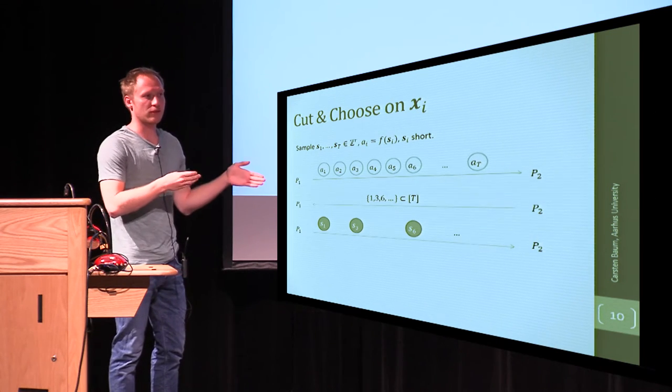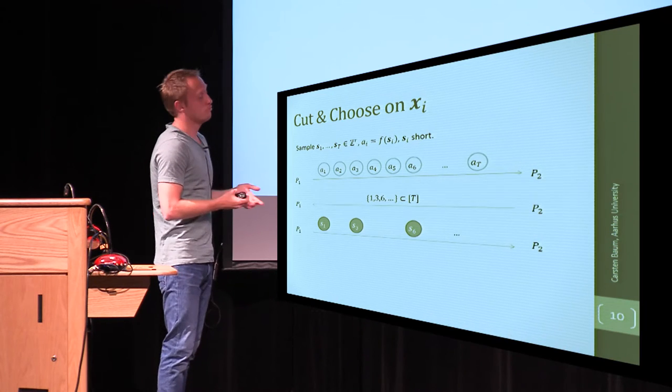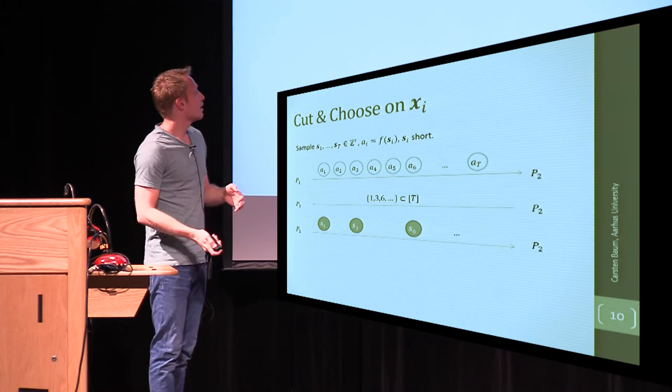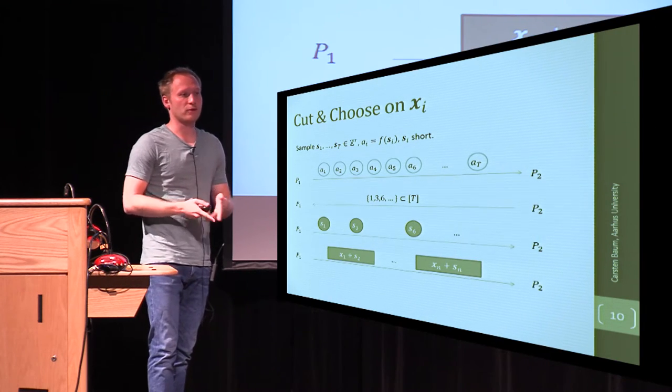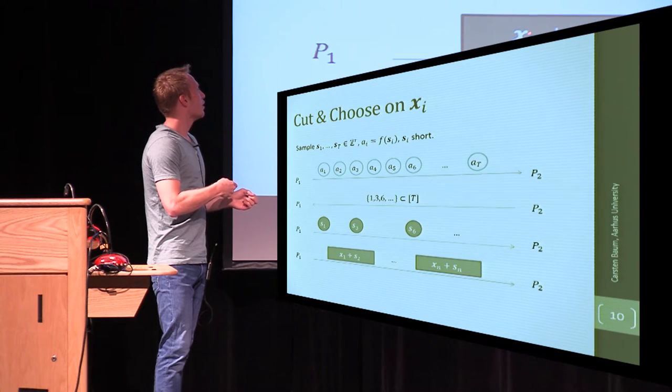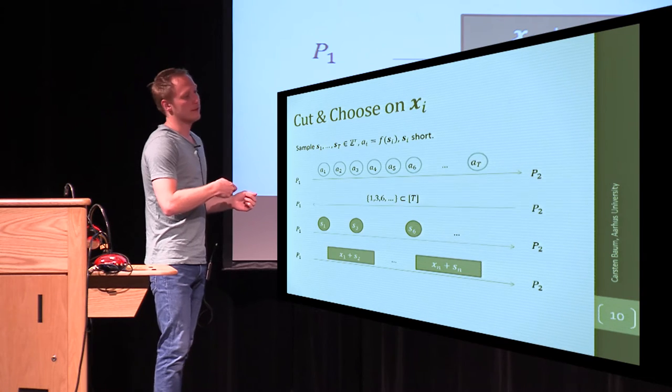So, the verifier looks at all of these opened choices that he made, and if they're all short, and if they actually all exist, then in the next step, the prover will send him, for the remaining values, sums of the secret that he wants to prove knowledge of and the auxiliary value.